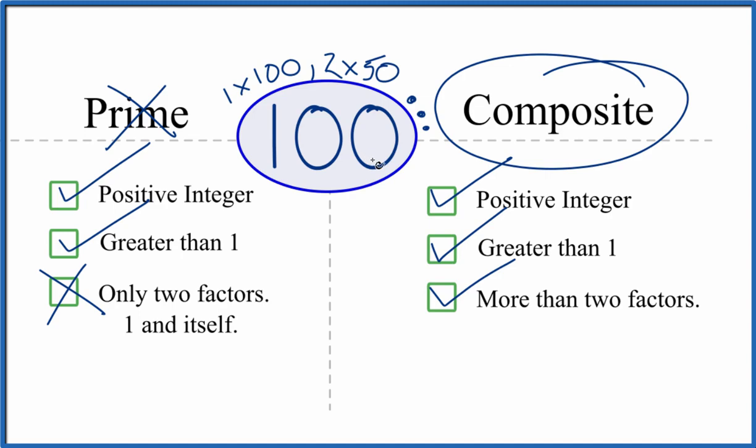This is Dr. B looking at whether 100 is prime or composite. It is composite. Thanks for watching.